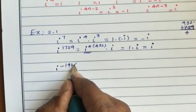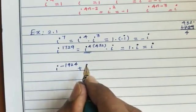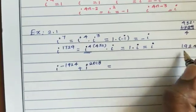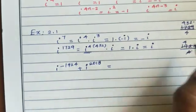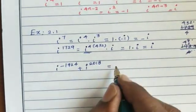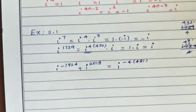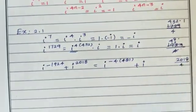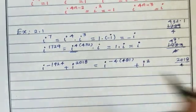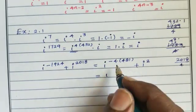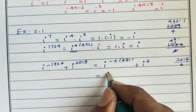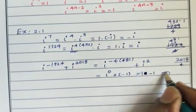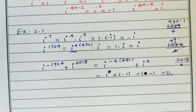Simplify i^(-1924) + i^2018. For 1924 ÷ 4: 4 × 481 = 1924, balance 0, so i^(-1924) = i^(-4×481) = i⁰ = 1. For 2018 ÷ 4: balance 2, so i^2018 = i² = -1. Therefore 1 + (-1) = 0.